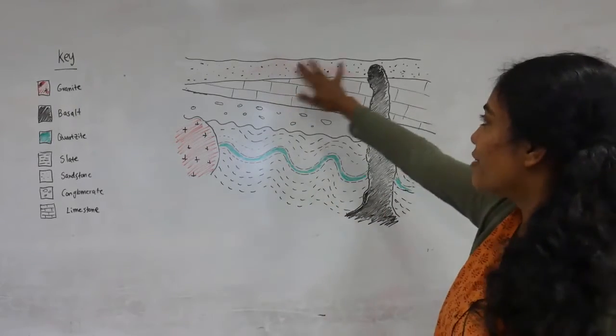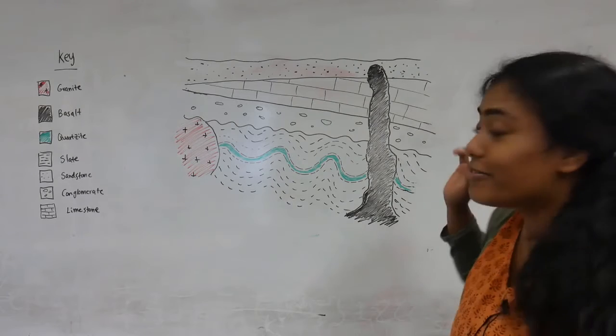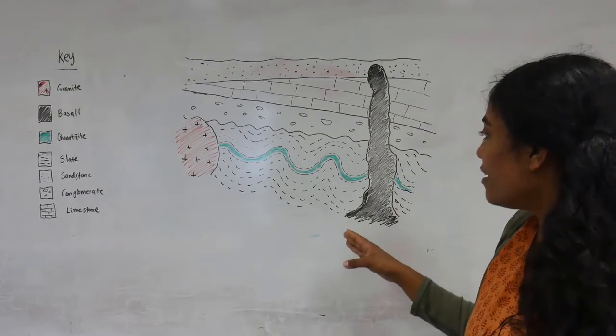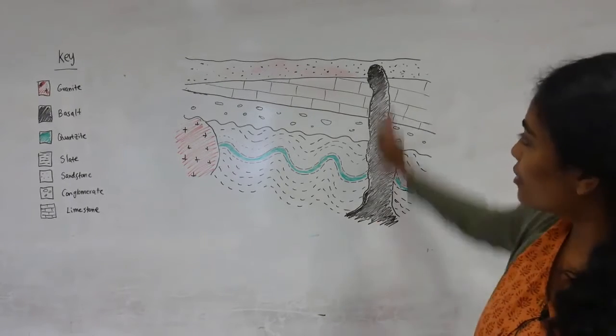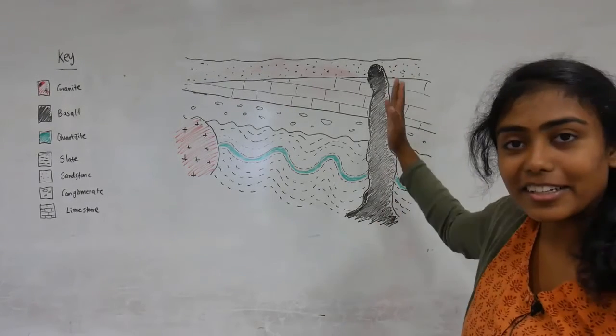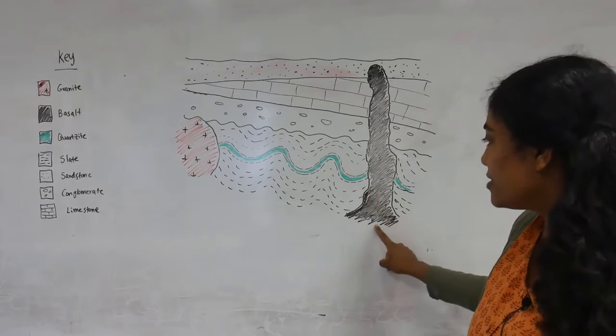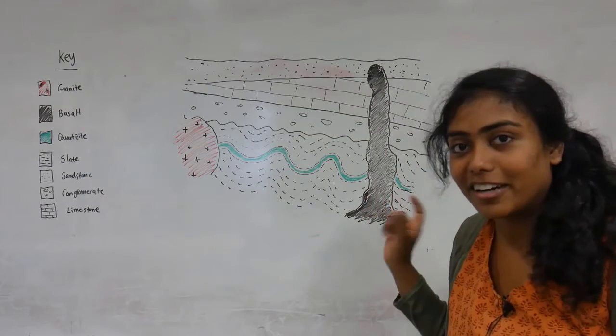And then we had erosion. And the very final thing to have happened here is this basaltic intrusion which came up and cut through all of these layers. So this is the youngest unit here.